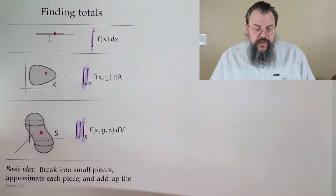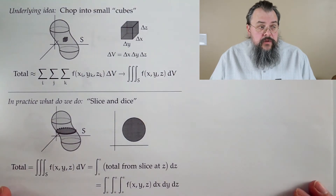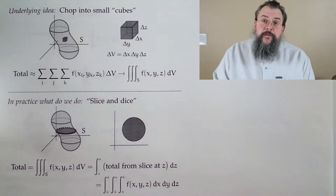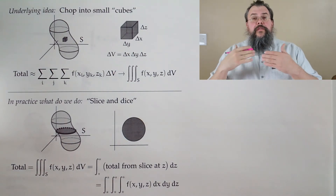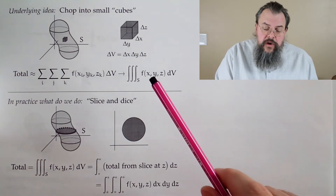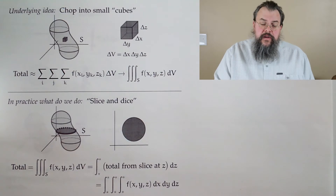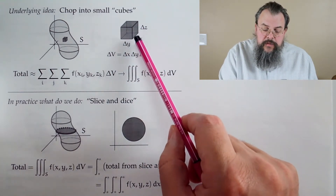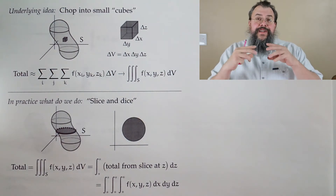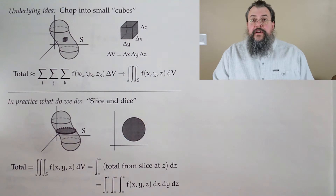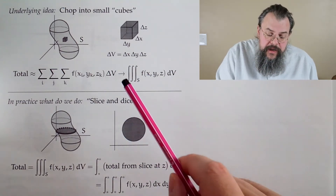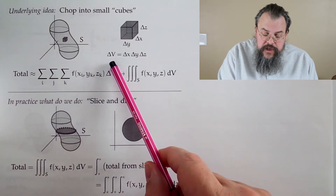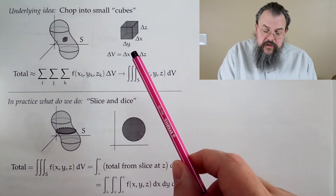How do we actually do it? Since we're working in our Cartesian coordinate system, we'll chop things up into little cubes. Why does Cartesian give little cubes? We think of our variables as x, y, and z. Perturbing x gives movement in one direction, perturbing y in a perpendicular direction, and perturbing z in the third direction. So the shape that forms when we perturb our variables is a nice little box — that's what we chop our shape into. The volume of each little box is Δx · Δy · Δz.